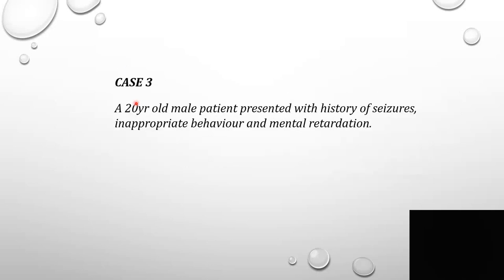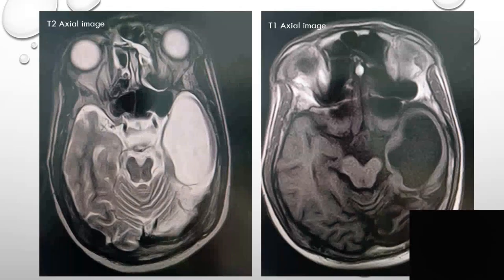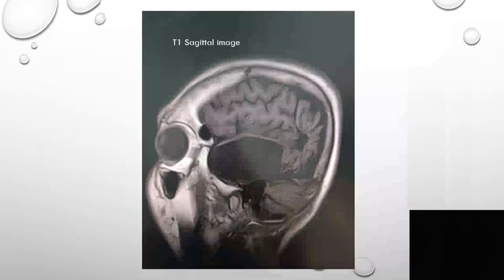Case number 3: A 20-year-old male patient presented with history of seizures, inappropriate behavior, and mental retardation. T1 and T2 axial MRI images show a CSF signal intensity cystic lesion in the left temporal lobe, communicating with the adjacent subarachnoid space, with surrounding encephalomalacia involving the left parieto-occipito-temporal region. This is the characteristic appearance of porencephaly involving the left temporal lobe.